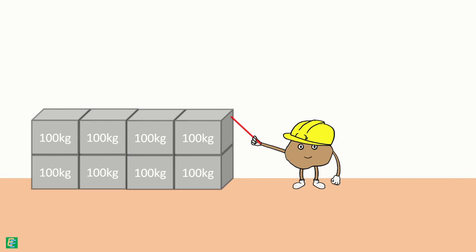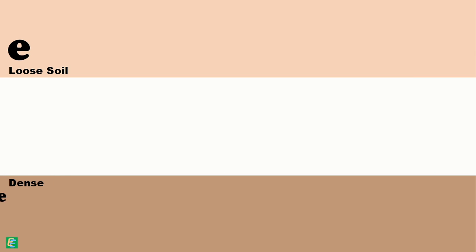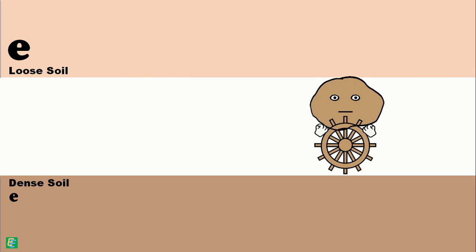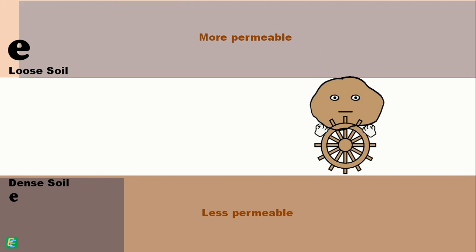Again, if we know the void ratio of a soil sample, we have better control over fluid conductivity and particle movement through its pores, as loose soils show high conductivity while dense soils are not so permeable.